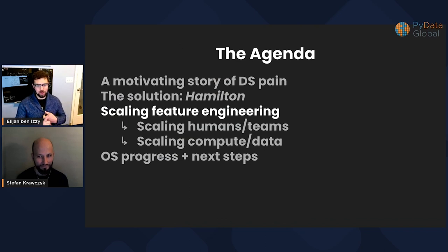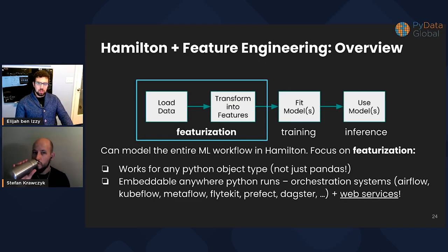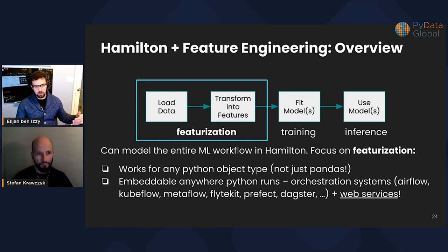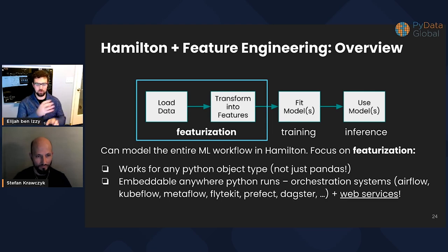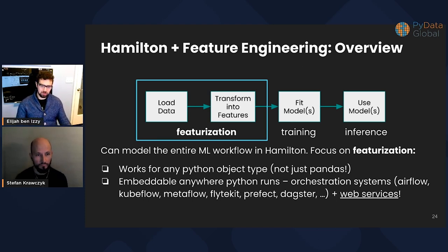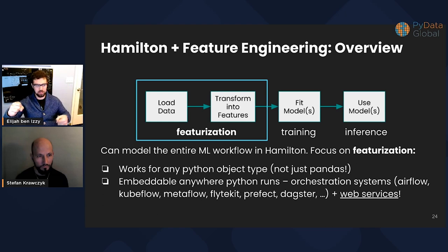So we talked about why we created Hamilton and what Hamilton is. Now let's talk about how Hamilton can help teams scale their feature engineering pipelines. Looking at the whole machine learning model lifecycle, the featurization part is: load the data, transform it into features, fit models, and use those models to infer. You can model the entire machine learning workflow in Hamilton — we've seen that both in open source cases and at Stitch Fix. Hamilton supports any Python object type, not just pandas, and it's embeddable anywhere Python runs — Airflow, Kubeflow, Metaflow, Prefect, Dagster. We've even seen people run it in Flask apps to cleanly represent data flow from request to response.